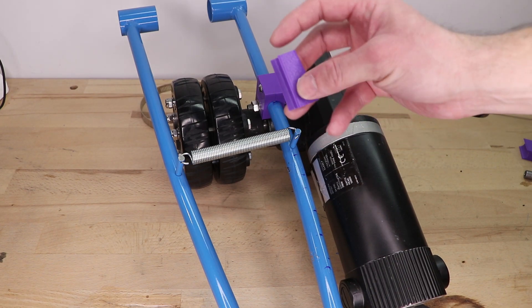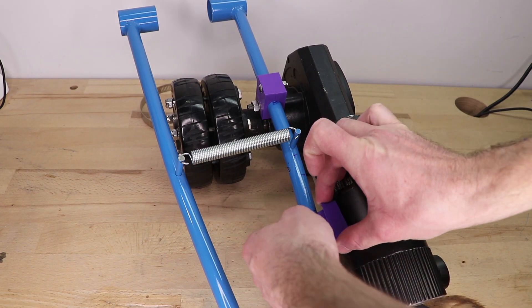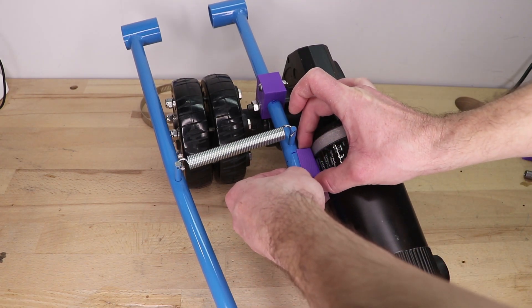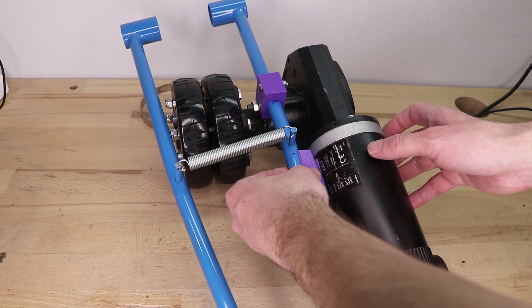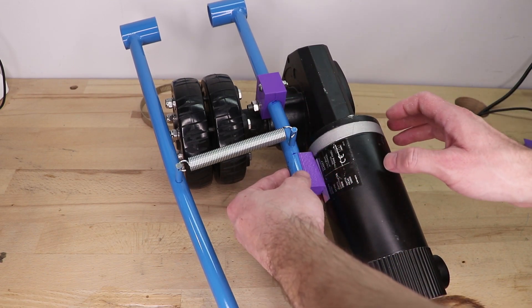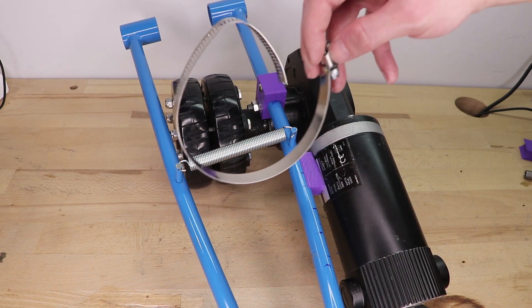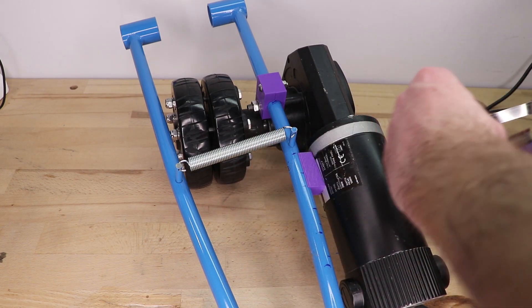Then I use the smaller one of the two spacers and then mount the motor with the big hose clamp to the tow bar.